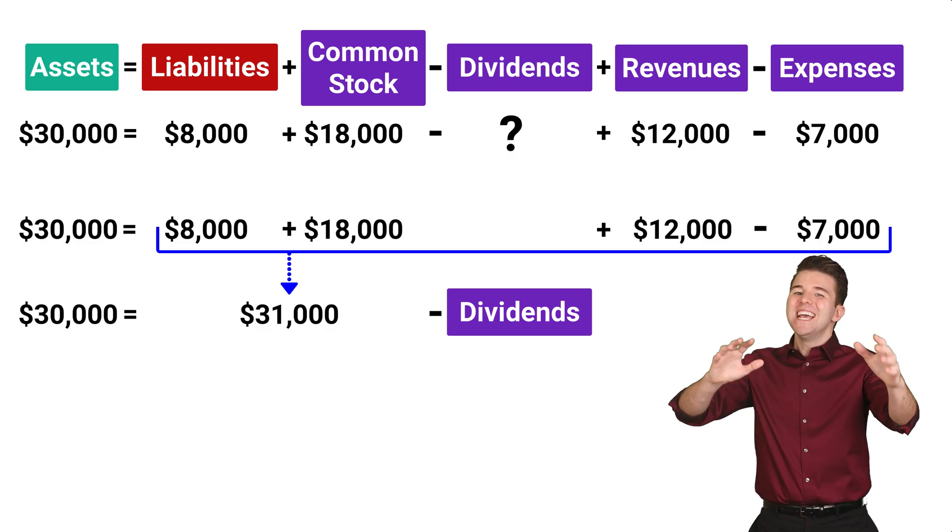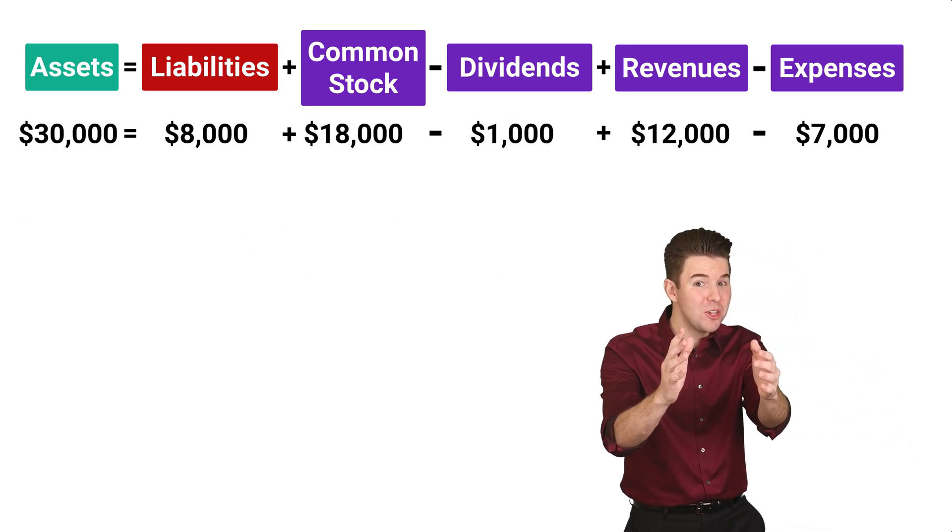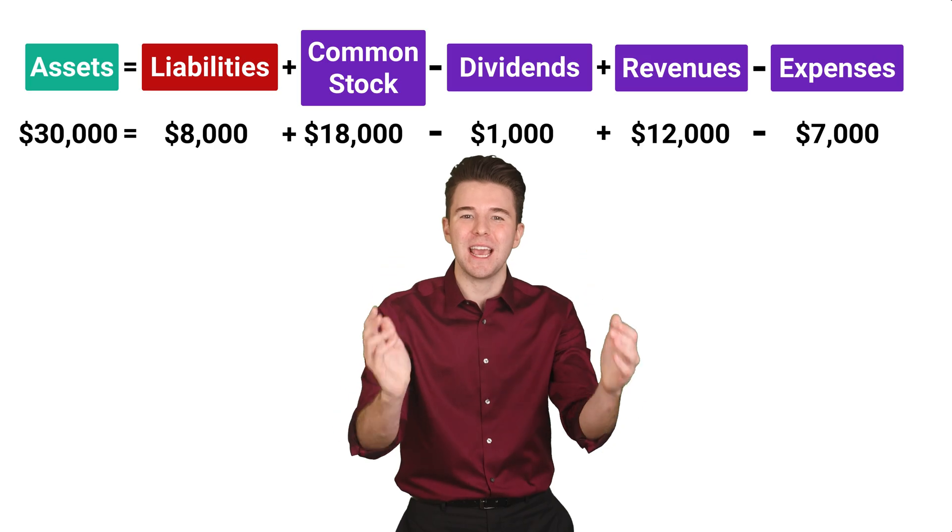Therefore, dividends must be 1,000. And that's how to use the expanded accounting equation.